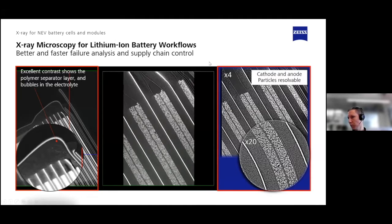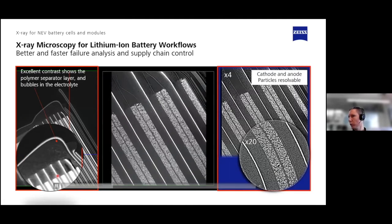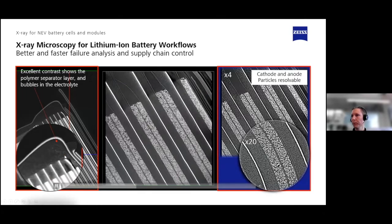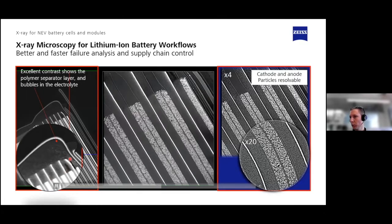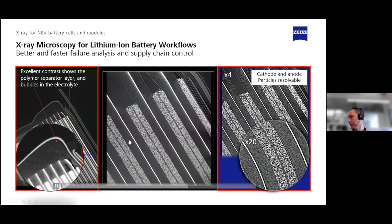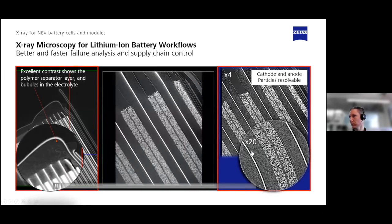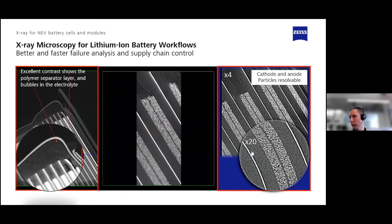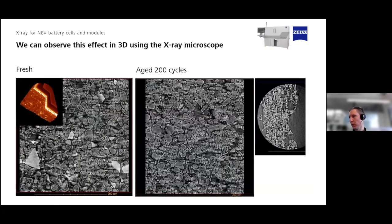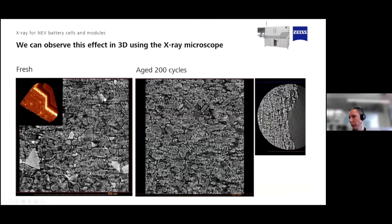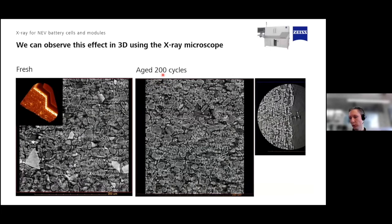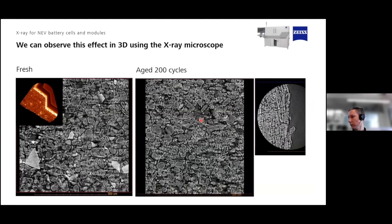Here's another example of the same part. In this image you have really good contrast — you can see the separator layer made of polymer, bubbles in the electrolyte, and all the single particles. With that, it's possible to have a look at, for example, the silicon particles in your cell. You can see a fresh cell image and the same region in the same cell after 200 cycles of aging. As you can see in this example, there are no longer any silicon particles visible.